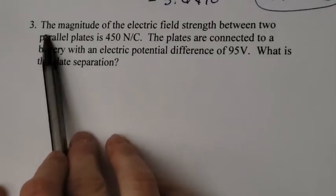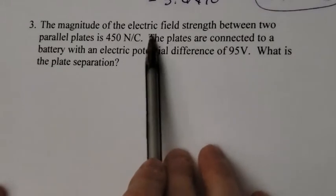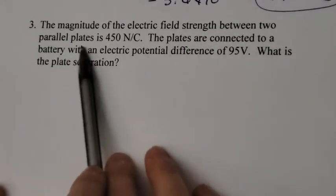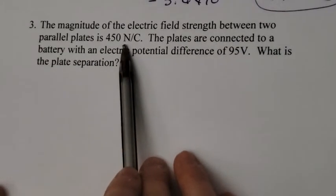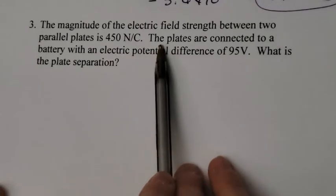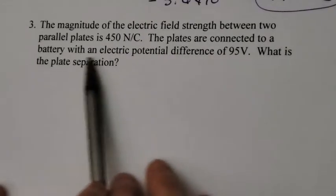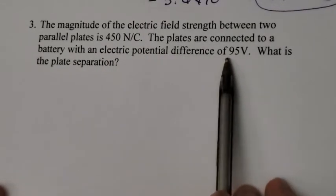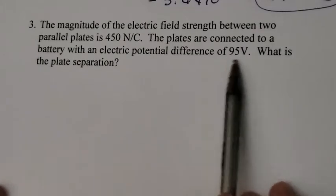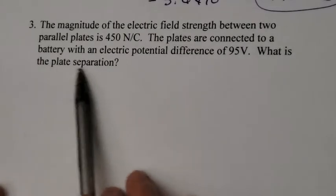Our third example: The magnitude of the electric field strength between two parallel plates is 450 newtons per coulomb. The plates are connected to a battery with an electric potential difference of 95 volts. So that's the voltage. What is the plate separation?